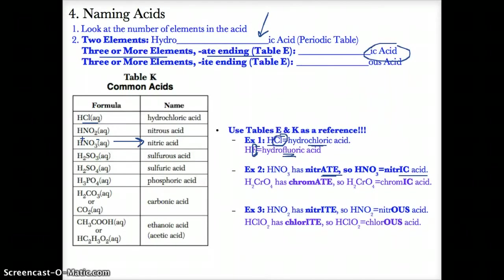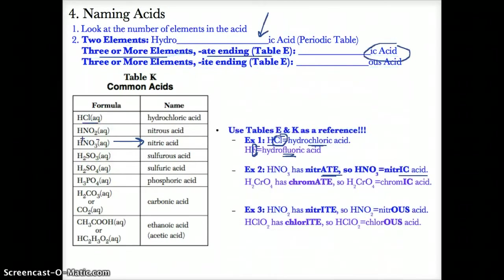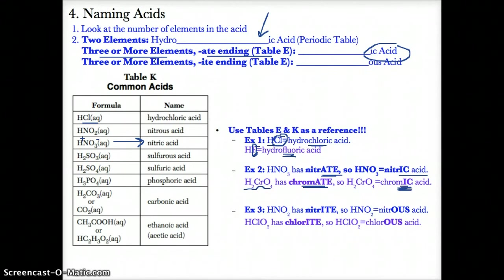Looking back at table E, CrO42- is chromate. So H2CrO4, since it has the -ATE ending for the ion chromate, becomes chromic acid, because the -ATE ending of the polyatomic ion in an acid is replaced by -IC acid.